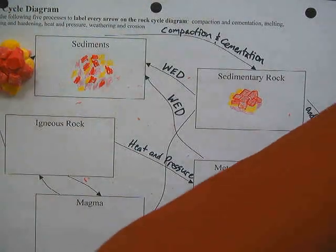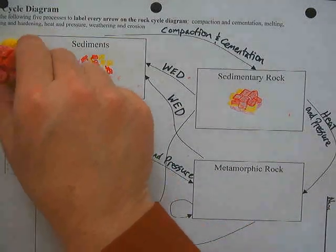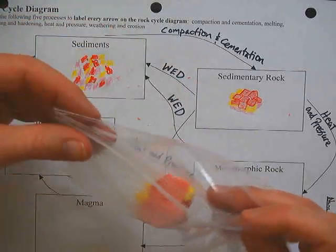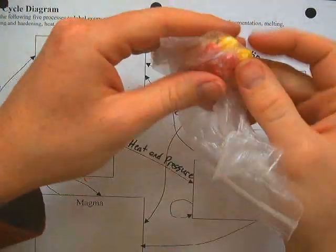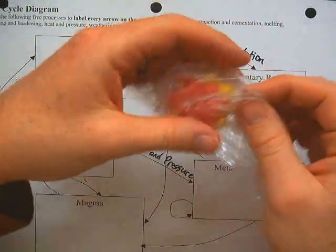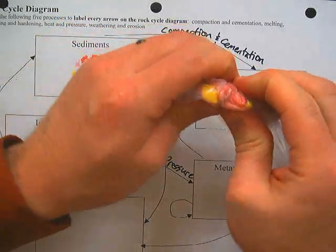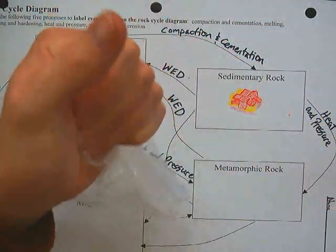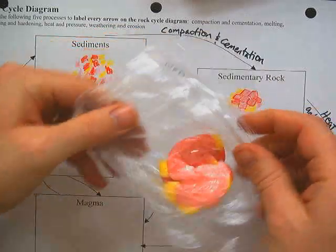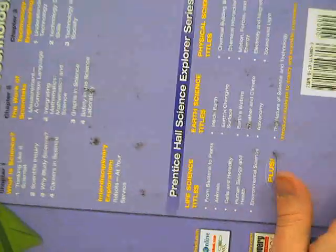To show heat and pressure in this lab, I'm going to take the sedimentary rock, put it in a bag, let all the air out, and seal it up. Then I'll rub it between my hands to generate heat — don't just hold it, get that friction going from rubbing. You want it warm enough to be nice and pliable before adding pressure, so I'll heat it up first.